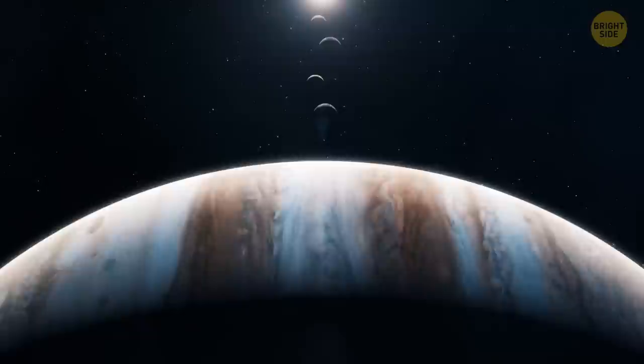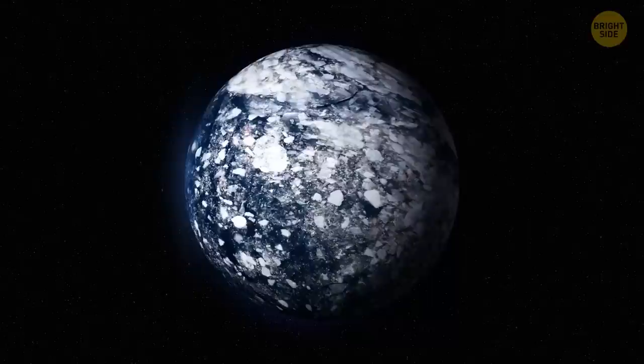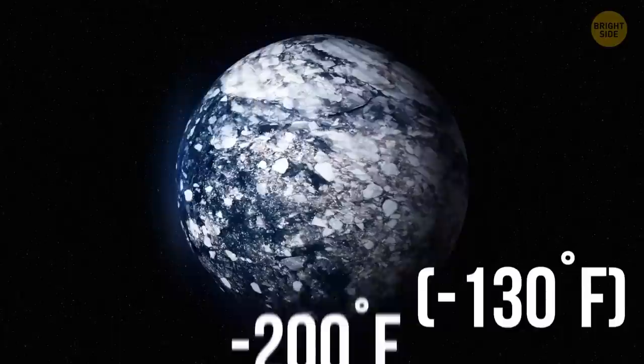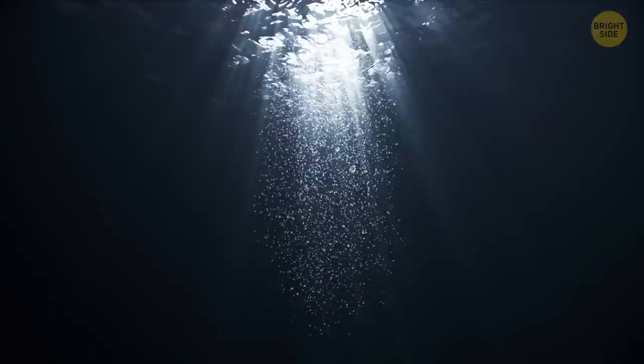This would make life on Earth impossible. But if Jupiter or Saturn disappeared, Earth would most likely drift further away from the Sun. And its temperature would drop to below negative 200 degrees Fahrenheit. If life managed to survive in such circumstances, it would probably be aquatic.